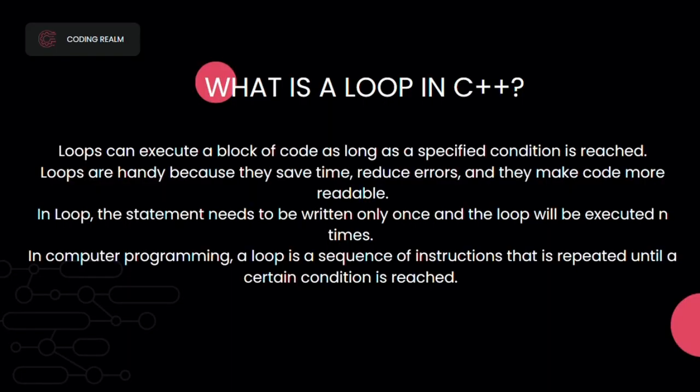What is a loop in C++? Loops can execute a block of code as long as a specified condition is reached. Loops are handy because they save time, reduce errors, and they make code more readable. For example, if I need to print an expression ten times, that takes time, but when I use a loop, I write the expression one time and the loop repeats it ten times.